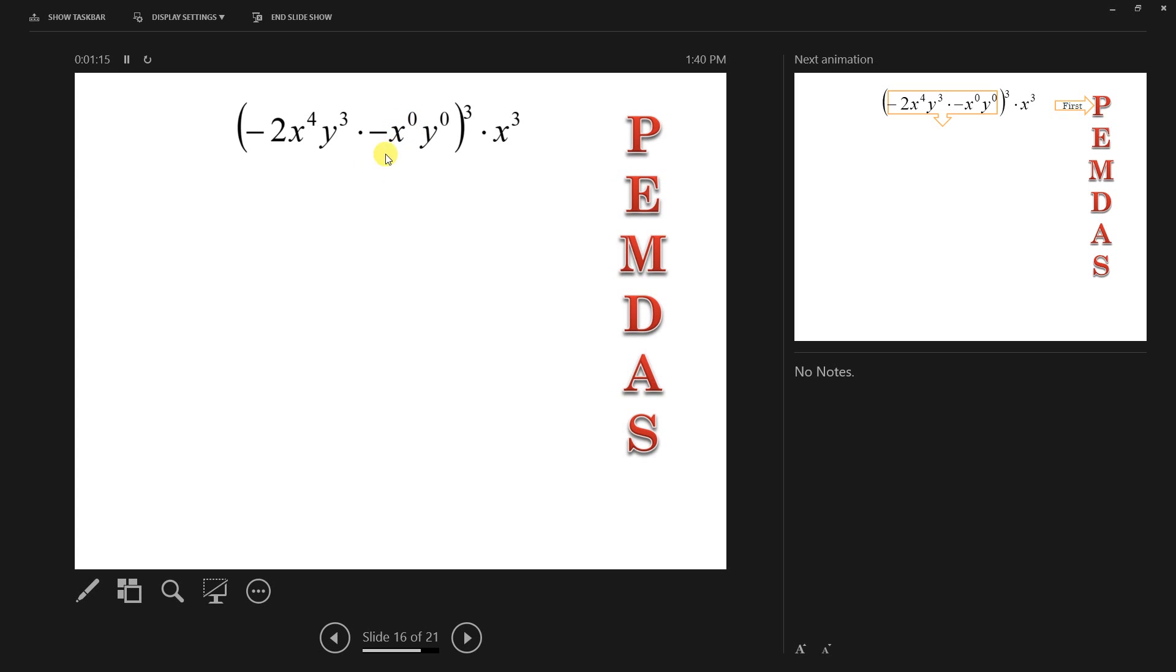But more importantly, when they do problems with negative bases and they have negative exponents or fractions, it gets super, super confusing to them. So by having them know that anything to the power of zero is one,